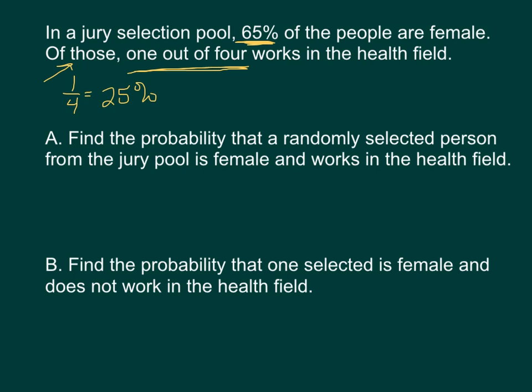So that's our problem. We have a couple probabilities here. Find the probability that a randomly selected person from that jury pool is female. So female and, there's our and probability, works in the health field. We know how to do and probabilities. We need to get the probability of each event and we multiply them together.